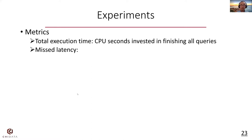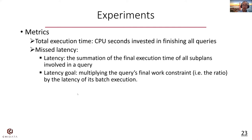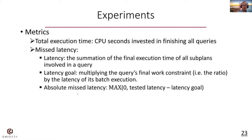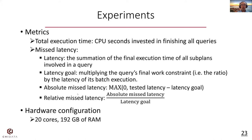We define the latency of a query as the summation of the final execution time of all subplans involved in the query. We compute the latency goal by multiplying the relative final work constraint ratio by the latency of executing a single query in one batch. We report two missed latency metrics: the absolute missed latency represents the difference between the tested latency and the latency goal, and the relative missed latency is the ratio between the absolute missed latency and the latency goal. All experiments use 20 cores and 192 gigabytes of memory.